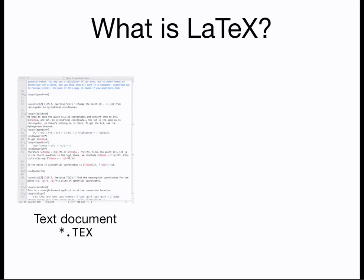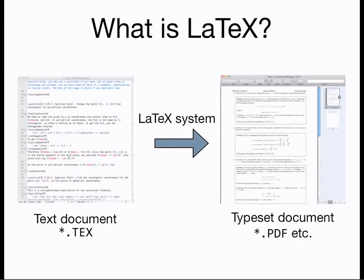Once the text document is created, you compile the source code using the LaTeX system that is separate from the text editor used to edit your content. Once the code is compiled successfully, LaTeX produces a PDF that contains the finished product. Other file types such as encapsulated PostScript are also possible for LaTeX to produce.